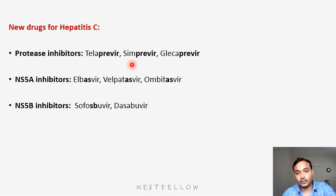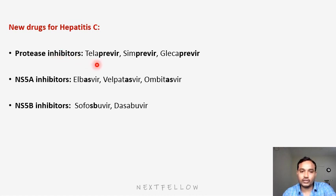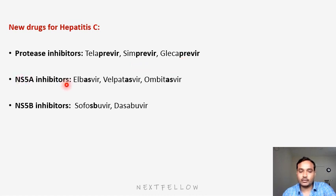For HIV, protease inhibitors end with 'navir' — that is a different group. For hepatitis C, protease inhibitors end with 'previr'. The drugs are: telaprevir, simeprevir, and glecaprevir. Next, NS5A inhibitors — these drugs have 'asvir' in the name. NS5A looks like 'A', so remember 'asvir': elbasvir, velpatasvir, ombitasvir.